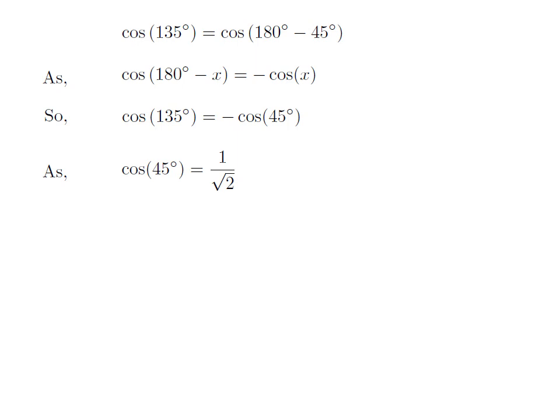We know the value of cosine of 45 degrees is equal to 1 upon square root of 2. So, the value of cosine of 135 degrees is equal to minus 1 upon square root of 2.